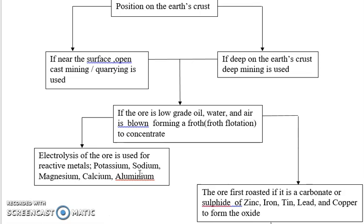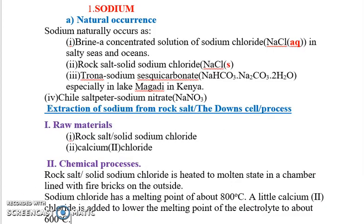If the ore is of a less reactive metal, such as zinc, lead, or copper, then we use reduction. We use a reducing agent like carbon or carbon monoxide (CO), because carbon and carbon monoxide have the ability to remove oxygen from compounds containing oxygen.